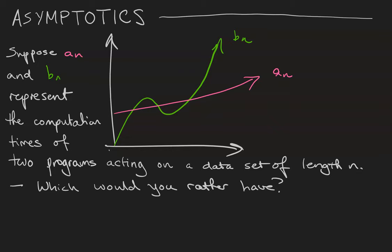Suppose that you have two programs, one with computation time aN, this pink line, and the other with computation time bN, the green curve, where the height of the curve represents the amount of time it takes to process n data points. Which of these two programs would you rather have?